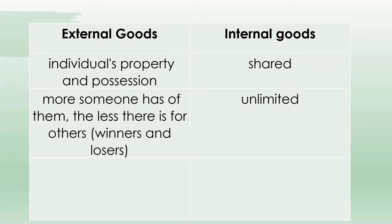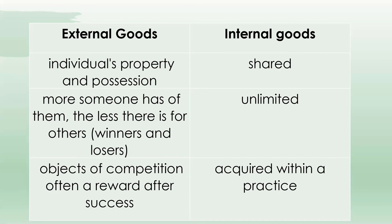With internal goods, they are unlimited and can be shared. Everyone who wants to play basketball can learn from LeBron James, Kobe Bryant, Michael Jordan, who learned from Dr. J — the skills they showed can be shared and developed; they're not limited to one person. External goods — like championships, trophies, endorsements, money, and social influence — are a reward after success. The internal goods are acquired within the practice itself: learning to play the game well and correctly.